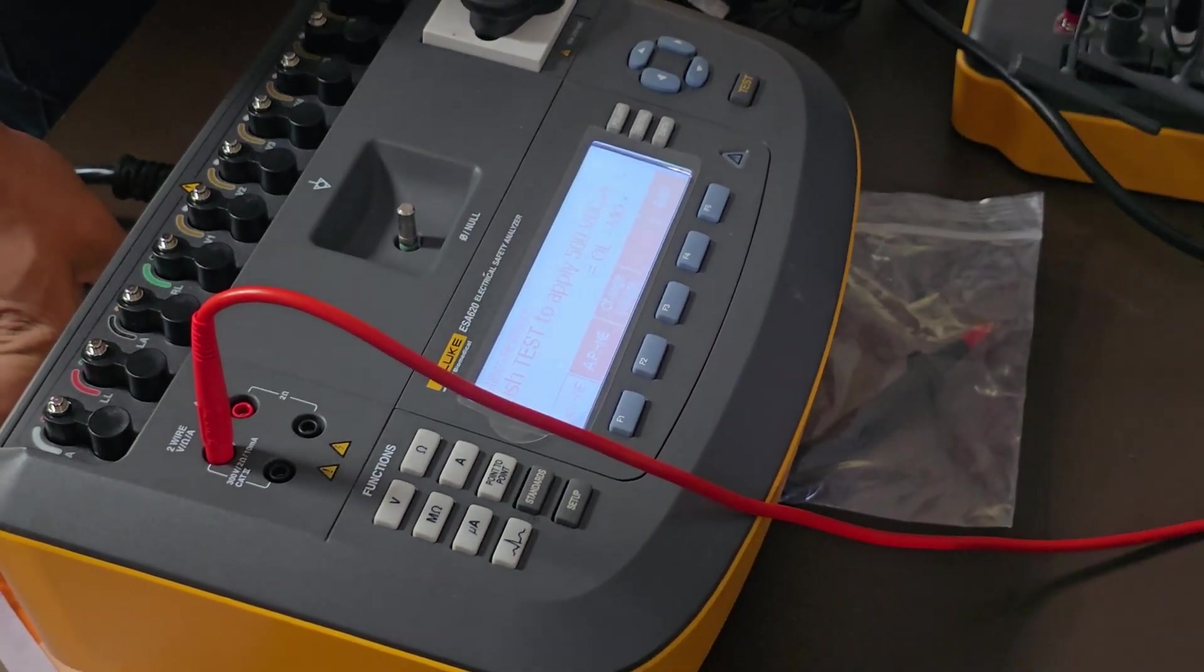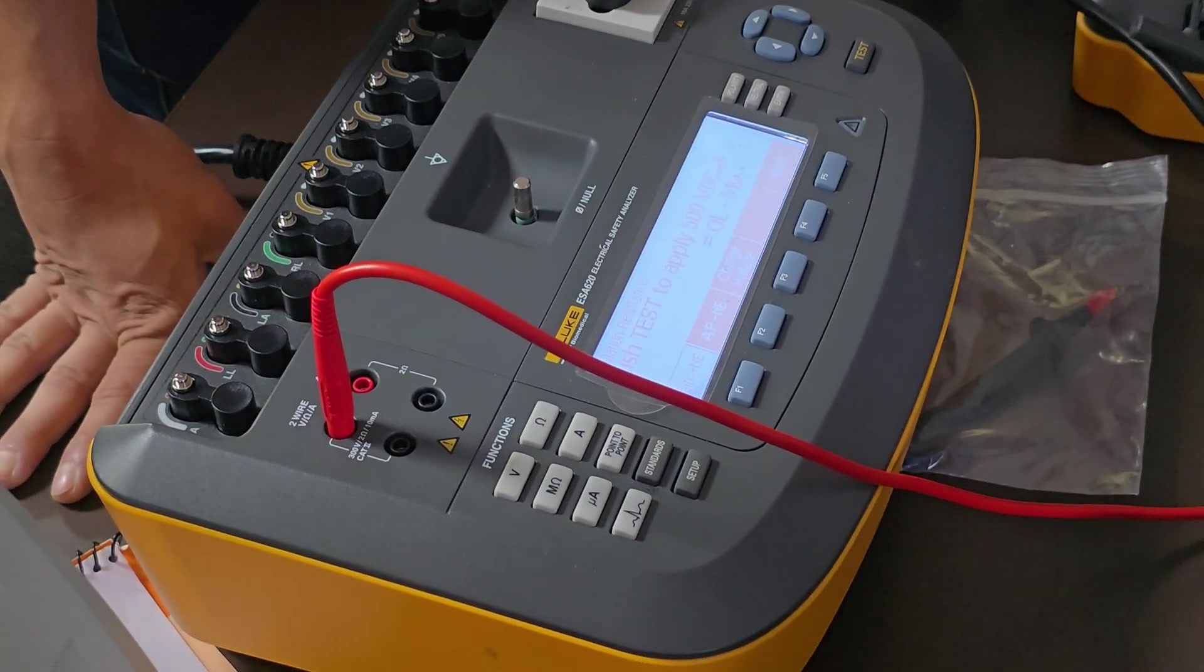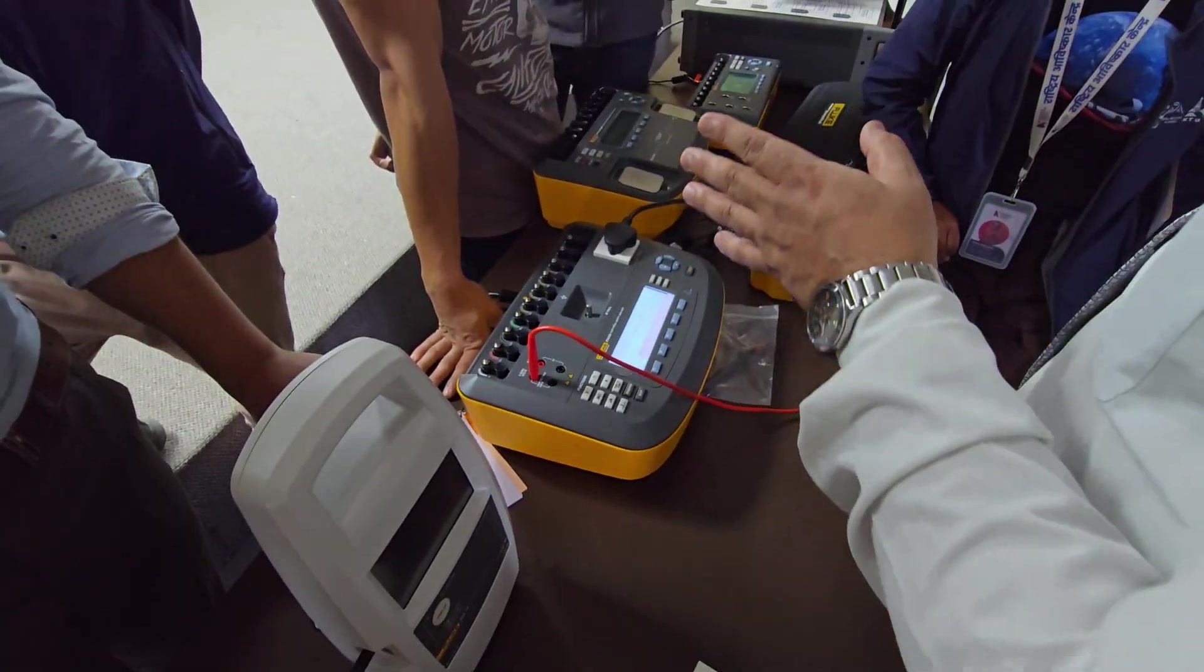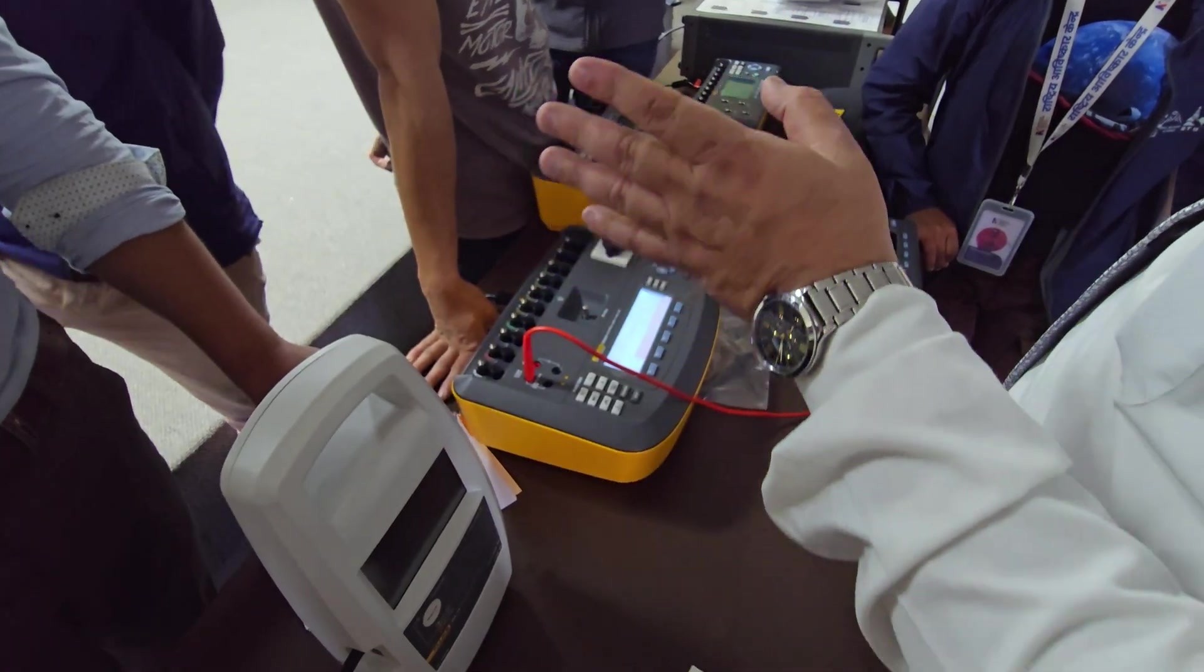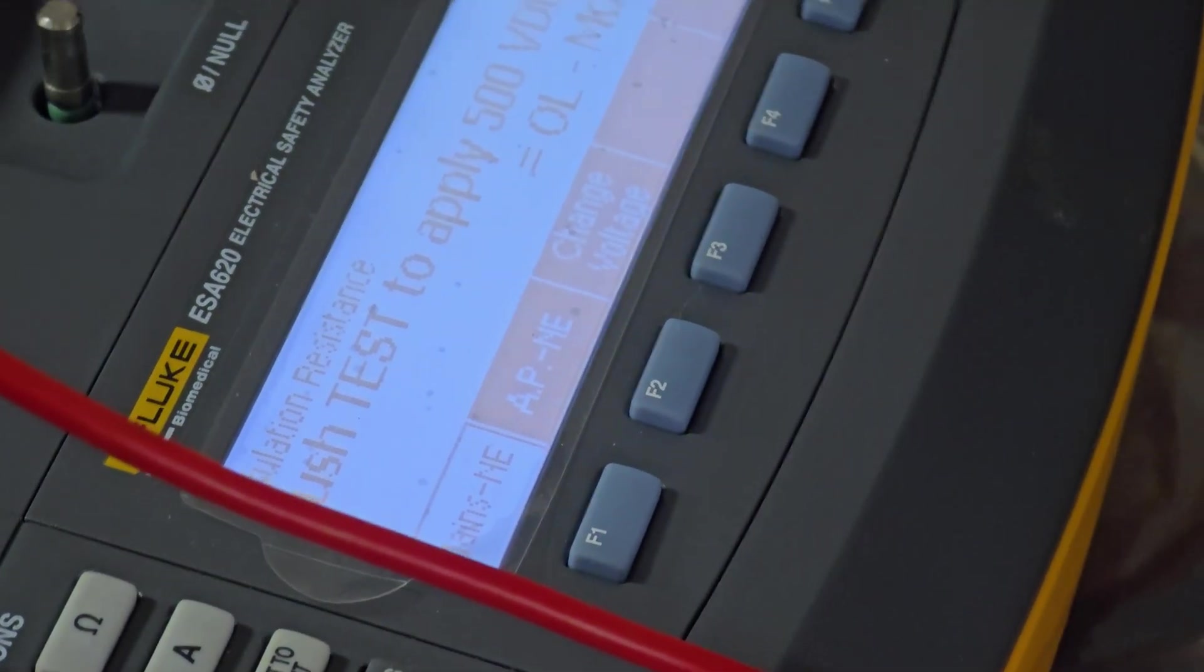And one more thing, if it is above 2 mega ohms, what I am trying to say is above 2 mega ohms, your equipment is passed. If it is 1.5 mega ohms or less than 2 mega ohms, then your machine is failed. Insulation resistance is broken.